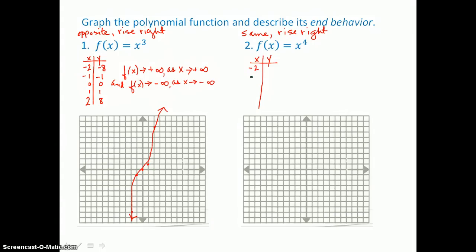Let x equal negative 2, negative 1, 0, 1, and 2. Negative 2 to the 4th power is 16. Negative 1 to the 4th power is 1. 0 to the 4th power is 0. 1 to the 4th power is 1, and 2 to the 4th power is 16. So when graphing: (−2, 16) is off my graph; (−1, 1) is in the second quadrant; (0, 0) is the origin; (1, 1) is in the first quadrant; and (2, 16) is again off my graph.